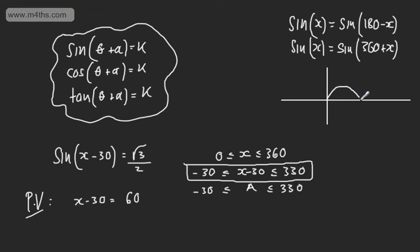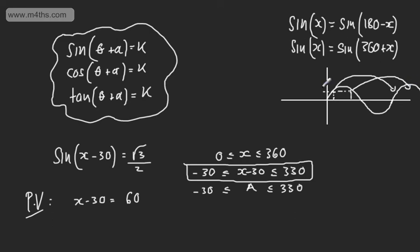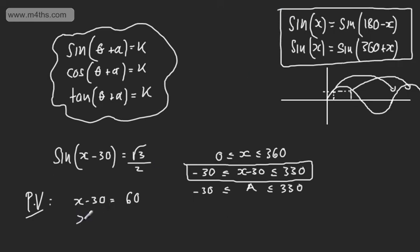Looking at this graphically, the sine curve is symmetric and periodic. If I have a solution x, I also have the same value x back from 180 degrees — this gives us the symmetry property. The curve cycles every 360 degrees or 2 pi radians, so subsequent solutions are 360 on and 360 back. So the second solution for x minus 30 is 180 minus 60, which gives us 120.